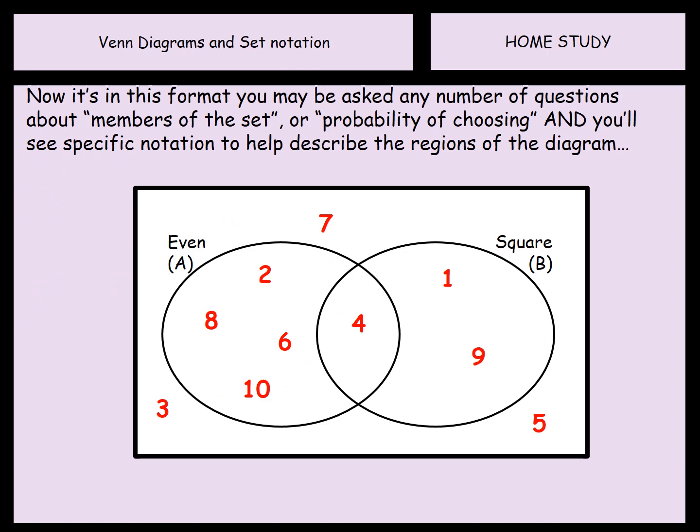So when we've done a question like this, the first one, there's all kinds of things that you might be asked. This is a very typical GCSE style question and you might be asked to list members of a particular set, in which case the notation is going to be really important. You might be asked to work out the probability of choosing something from a particular group.